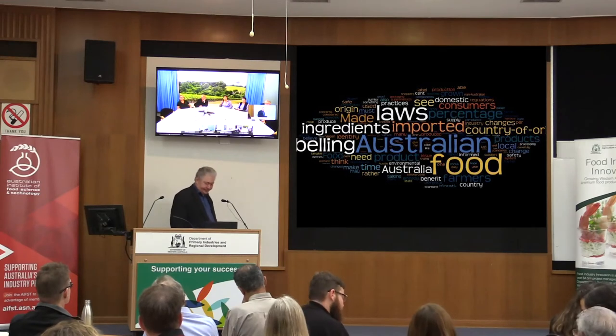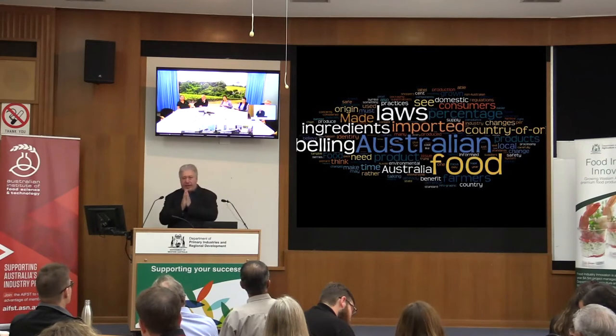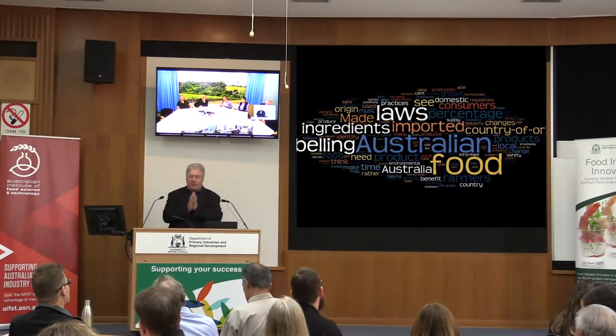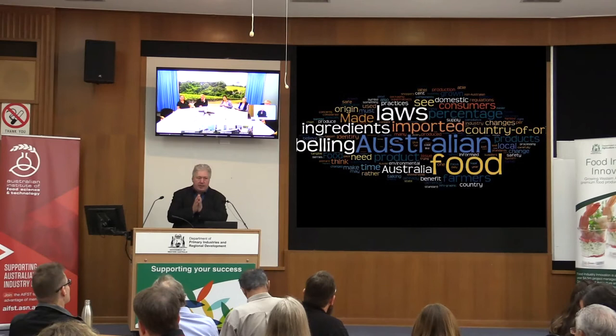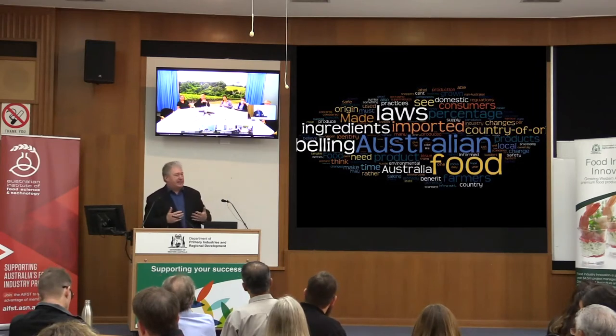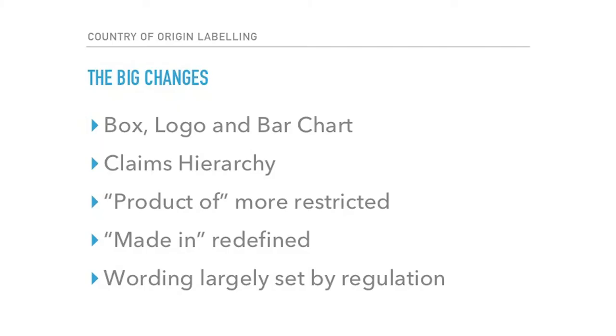Trade measurement is a major area of reform the industry is looking at. What's missing from that list? Country of origin labelling. Why do we have country of origin labelling — particularly now, why do we have this reform? Country of origin is about consumer information. Ultimately it's about providing the consumer with information.